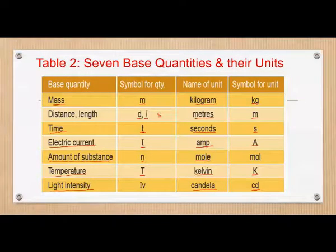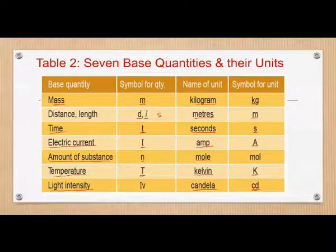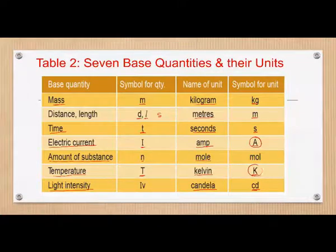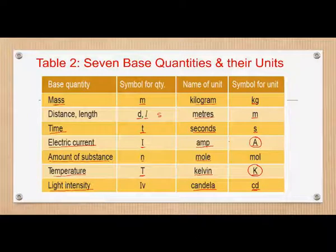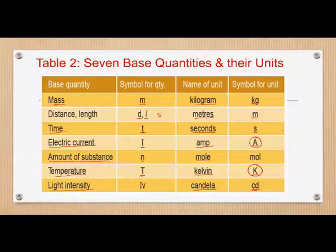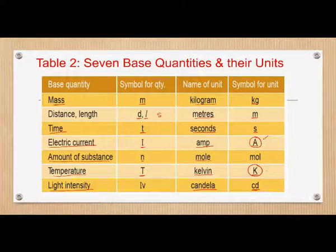Some units are written in lowercase, like KG and M. But for ampere and Kelvin, we write a capital letter because these units are named after scientists. So wherever you use the name of a scientist, the unit is written with a capital letter. All other units are written in lowercase.